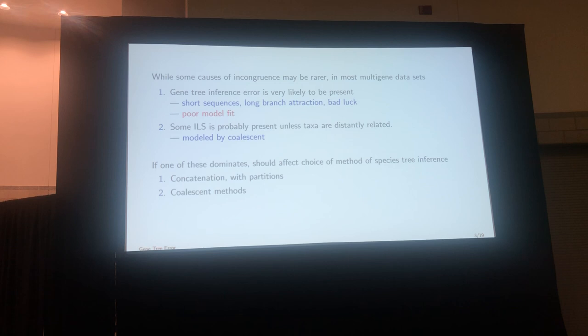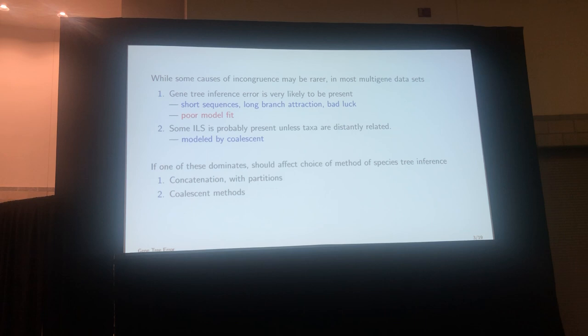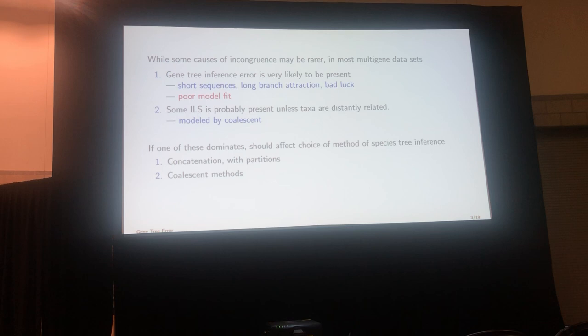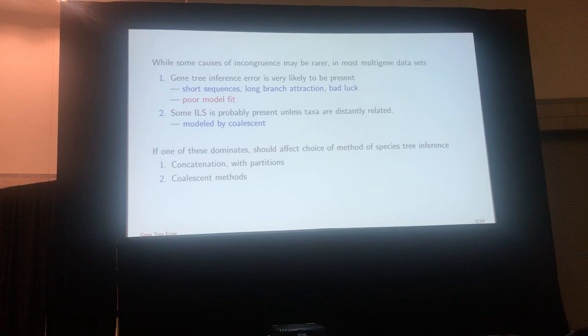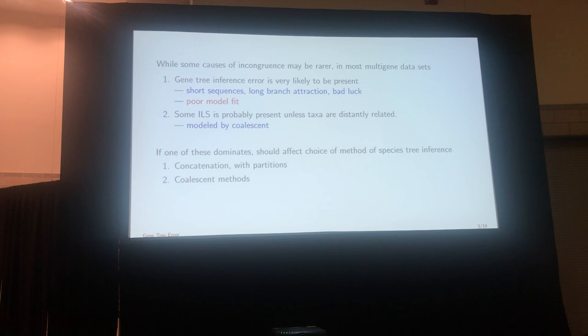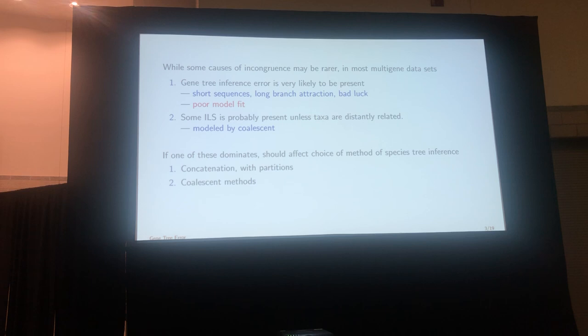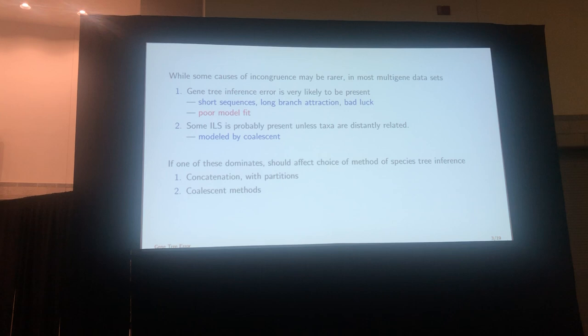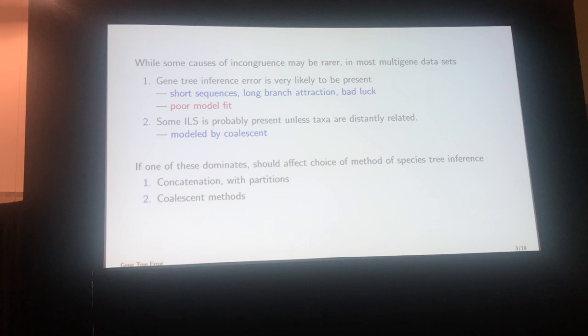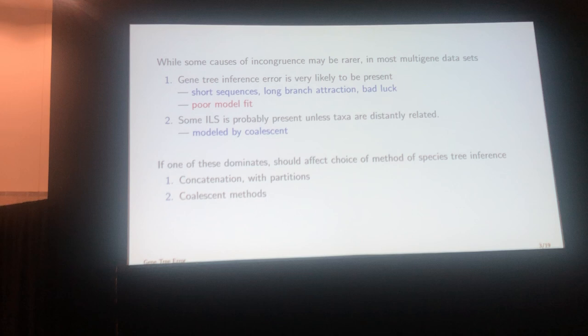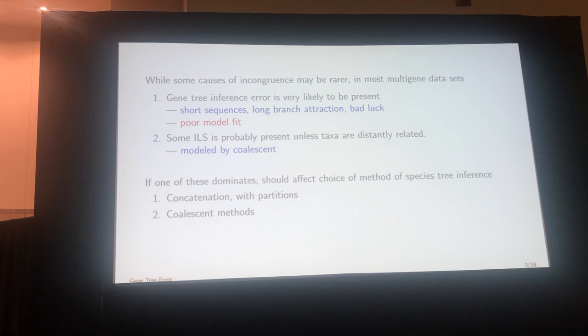ILS is likely present in most data sets unless all your taxa are very distantly related. That's something we can model via the multi-species coalescent. The controversy over whether one should use concatenation or coalescent methods to infer a species tree really comes down to balancing which issue you think is more important: bad gene trees due to insufficient data or poor model fit, versus real incomplete lineage sorting. Poor model fit is not something we can measure that well.